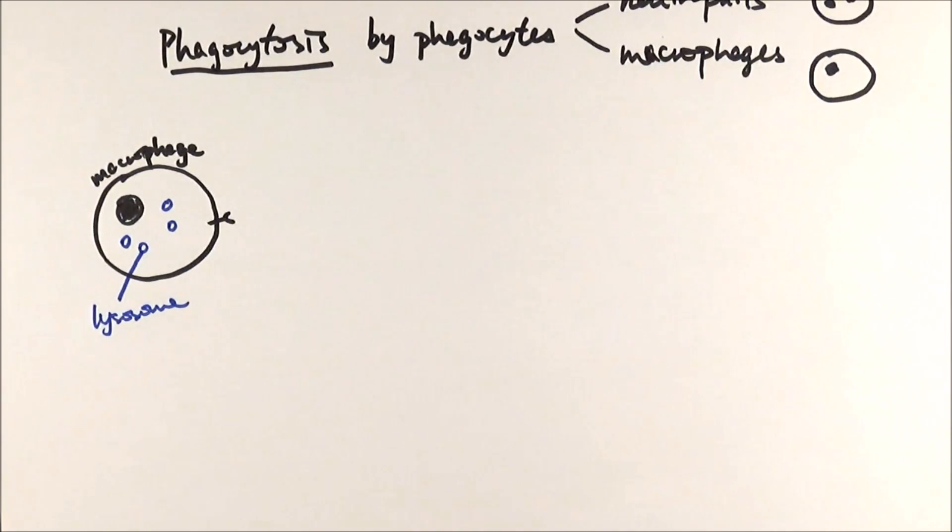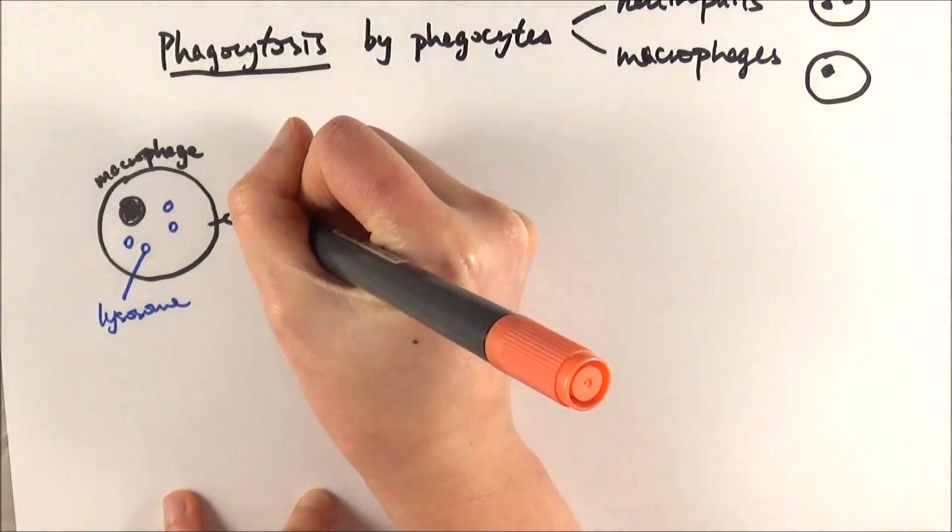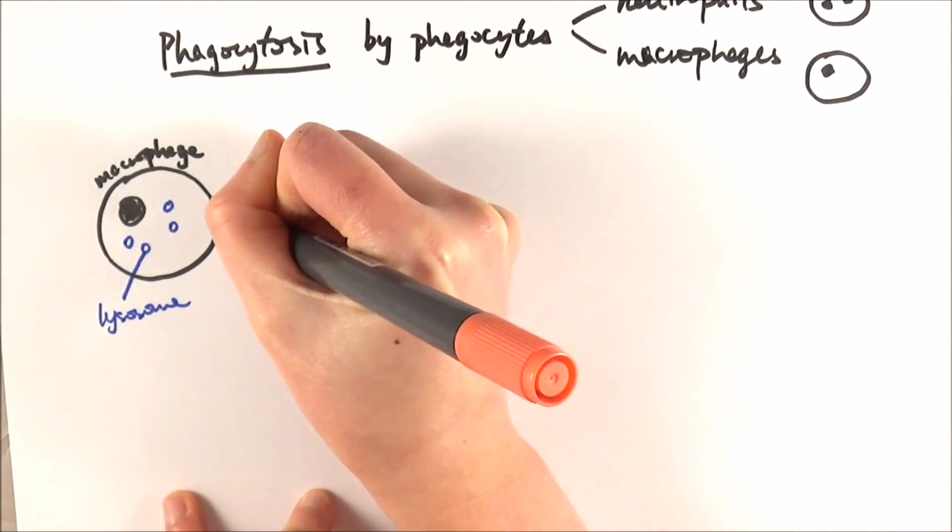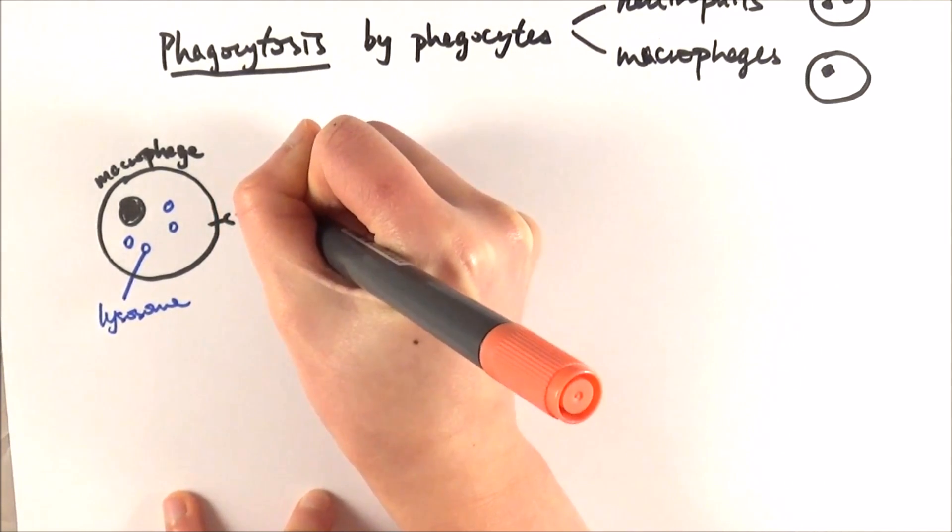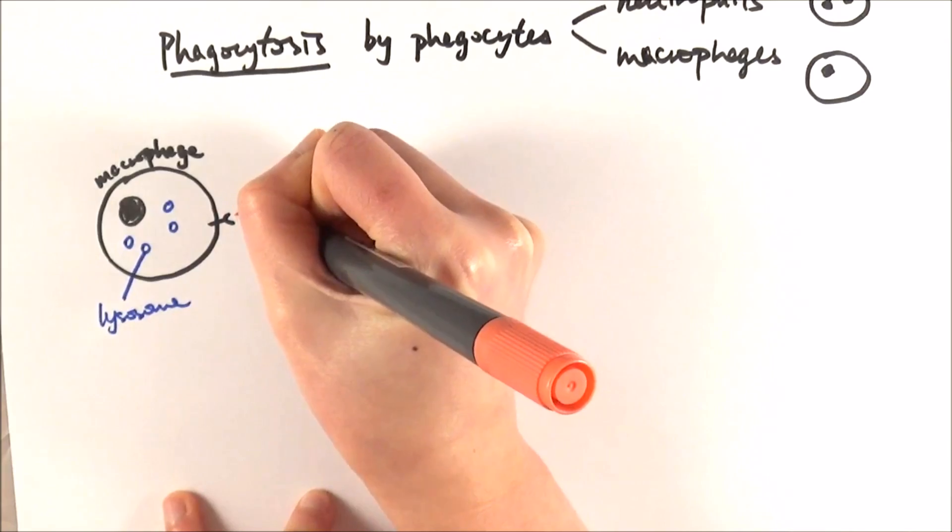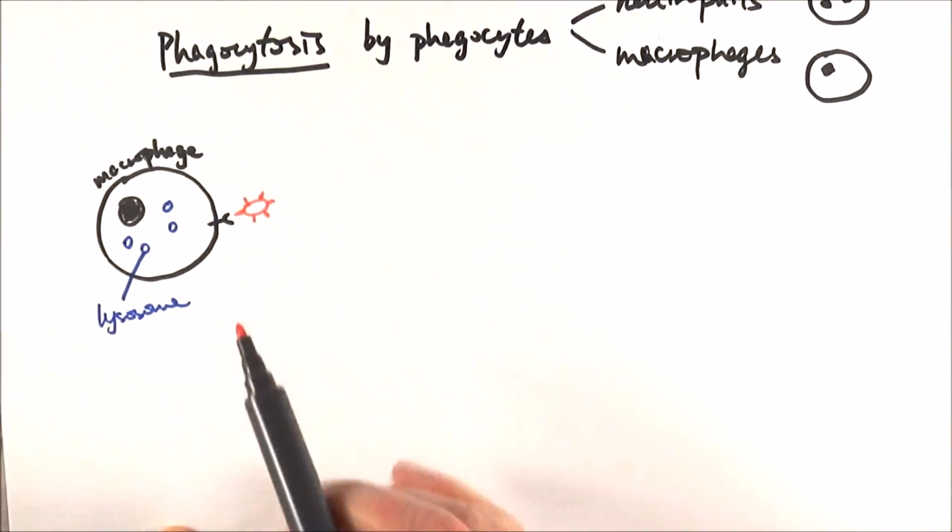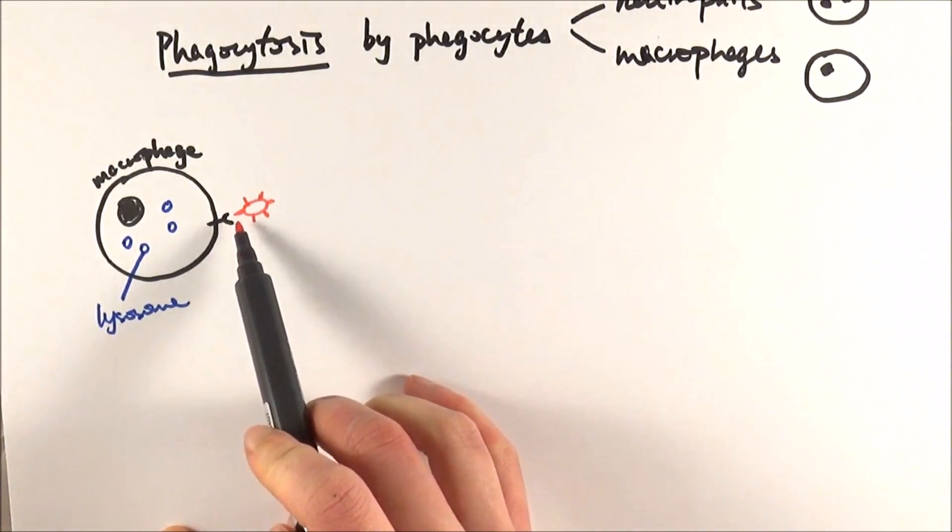...like the ones on a pathogen, then the macrophage will respond. And they will realize that they are under attack, and then they will start kicking off their immune response. So let's say here, we've got a pathogen, and it recognises that particular antigen there.